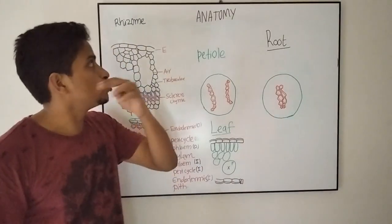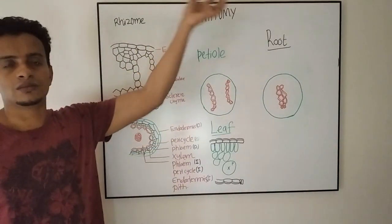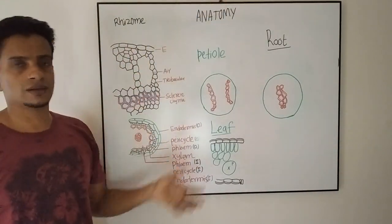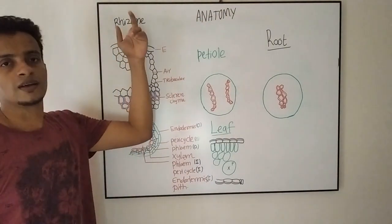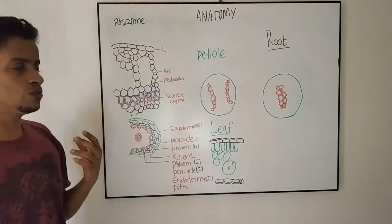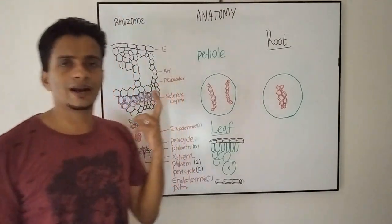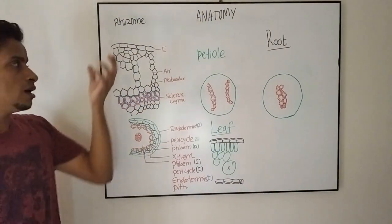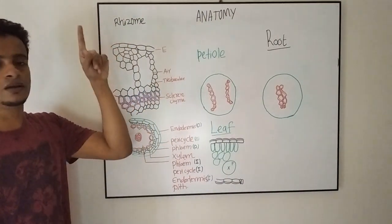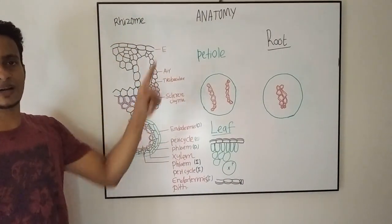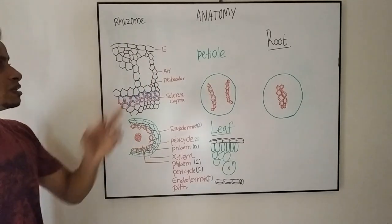Let us move into the anatomical features of each part. First, the rhizome. Rhizome is an underground structure. Anatomically, it is divided into three major parts.